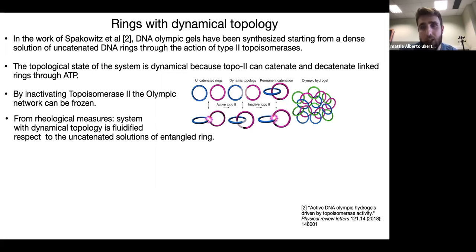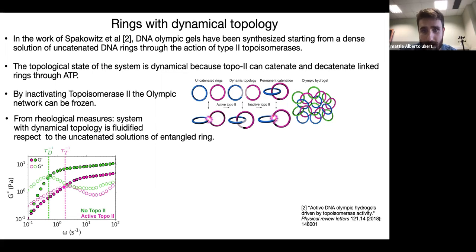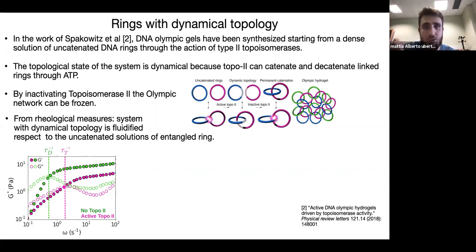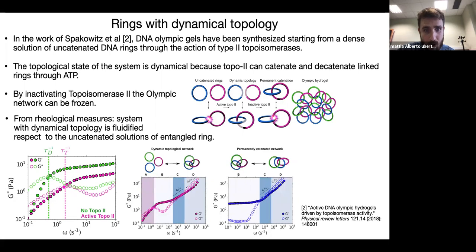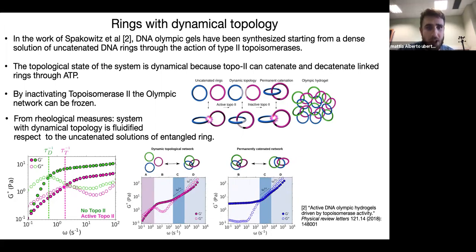They performed rheological measurements and found that the system with active topoisomerase was fluidified by the action of this enzyme relative to the uncatenated case, in the sense that relaxation happened at a timescale faster than for uncatenated rings. This is because topological constraints due to chain uncrossability were resolved through topo2 action. Inactivating topo2 instead produced a network behaving like a solid. These systems are interesting because their properties can be tuned by controlling the action of an enzyme.